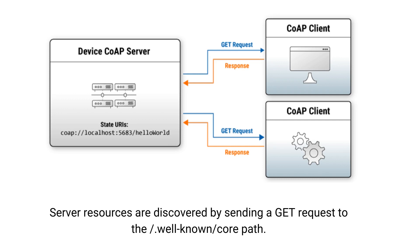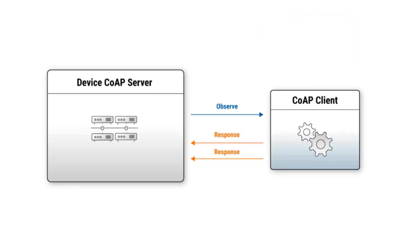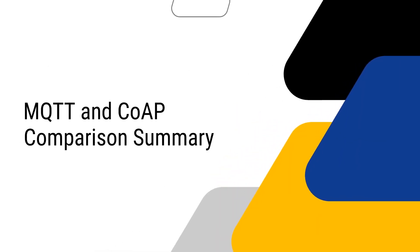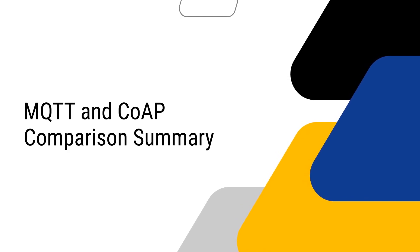With UDP multicast, you can discover servers in a group or send requests to multiple endpoints simultaneously — for instance, to turn a set of lights on or off. The Observe extension allows clients to subscribe to a server URI so that notifications are sent whenever the state represented by that URI changes.